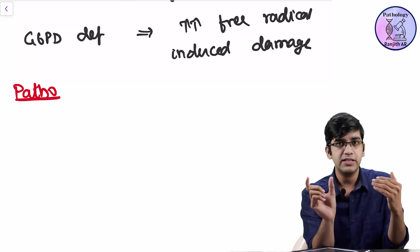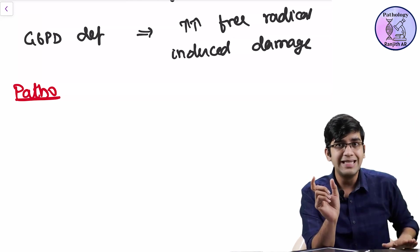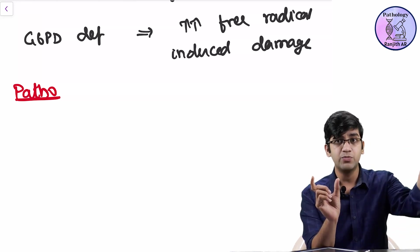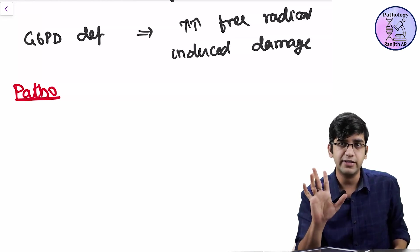my RBC or my free radical quantity will be more. At some point, free radical quantity will be less. It varies. Obviously, it varies. So if my free radical quantity is more, the lipid peroxidation will be very severe and it will destroy my RBC. Correct?